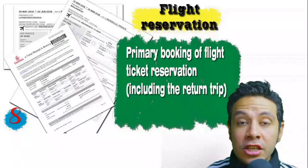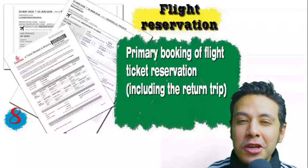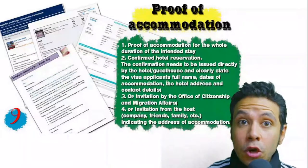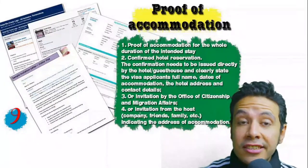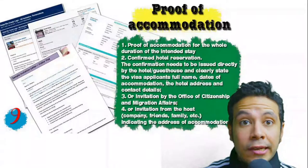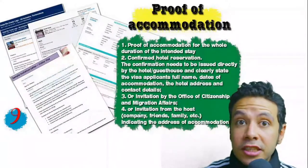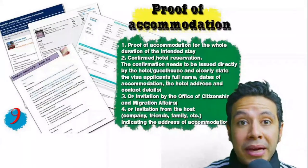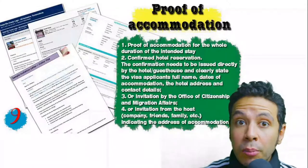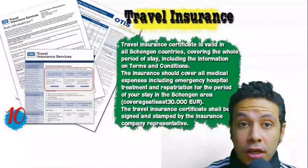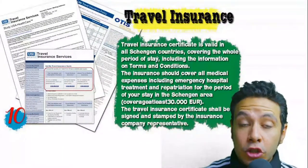The flight reservation must include a return ticket. You will also need proof of accommodation — a confirmed hotel reservation, an invitation from a host, or an invitation from an organization you are visiting. An initial hotel booking is generally acceptable, but sometimes a confirmed booking is needed. The hotel name, address, and contact number must be mentioned. If invited by a person, the invitation letter should be mailed to the embassy or submitted by you, accompanied by a copy of that person's passport.